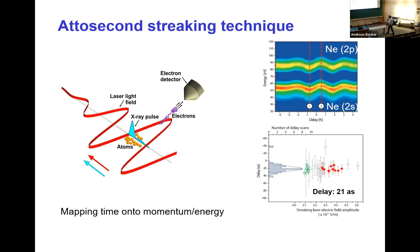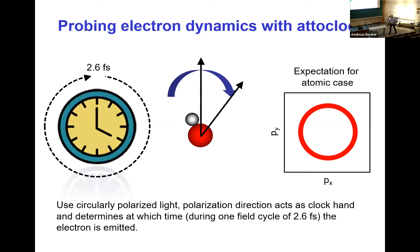You can go even further and remove the attosecond pulse entirely, getting attosecond resolution just from a femtosecond pulse. If you take a circularly polarized femtosecond pulse, within 2.6 femtoseconds the polarization direction rotates over a full circle — it acts like a clock hand. This is the attoclock. The polarization direction of the femtosecond pulse rotates like a clock, completing a full circle in 2.6 femtoseconds, giving attosecond angular resolution.